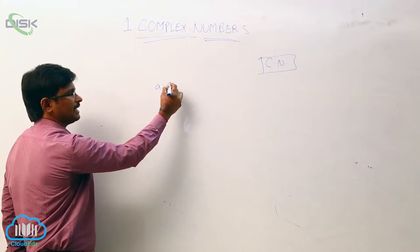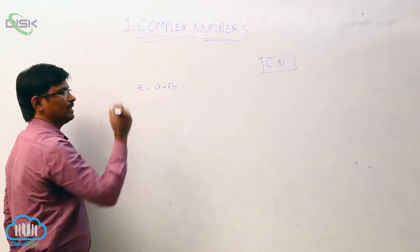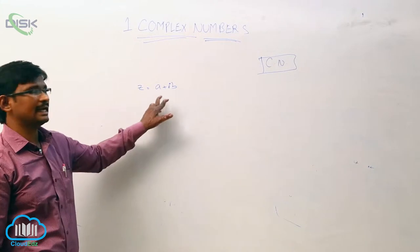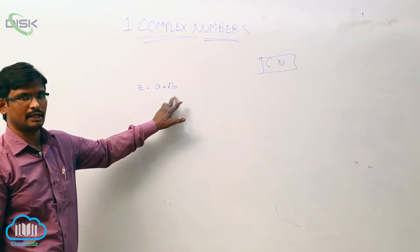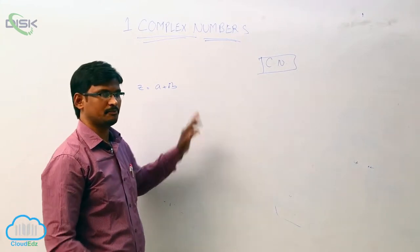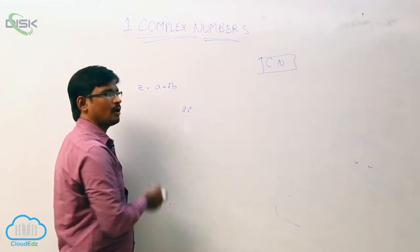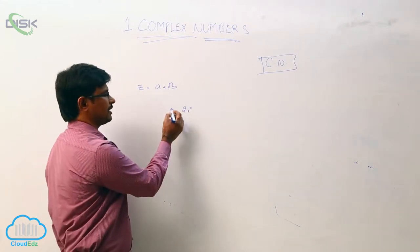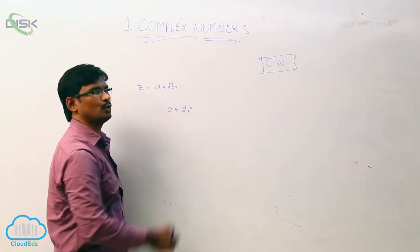We can write any complex number as a plus ib. For example, 2i is also a complex number because we can write it as 0 plus 2i.